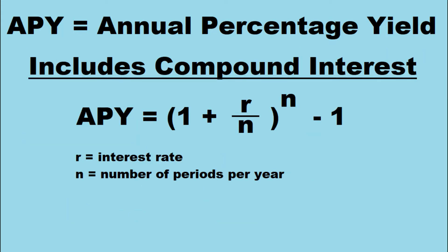APY — your annual percentage yield — is a bit easier to calculate, and this includes your compound interest. Your APY is equal to one plus your interest rate divided by the number of periods in a year, raised to the number of periods in a year, minus one.